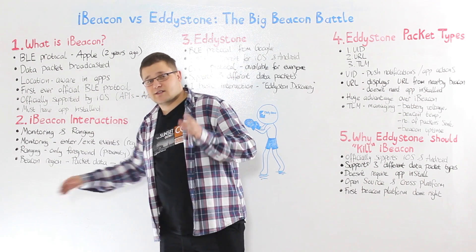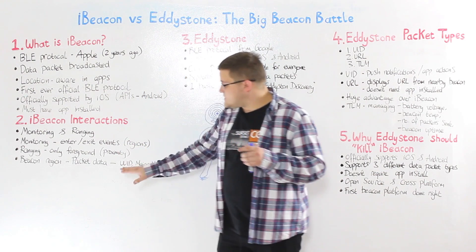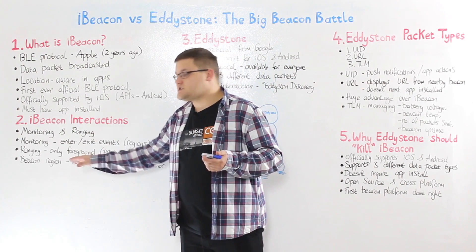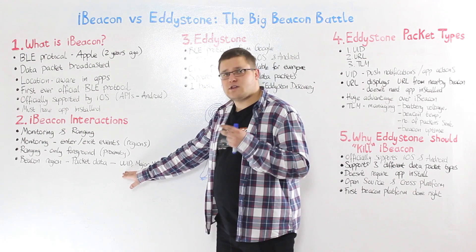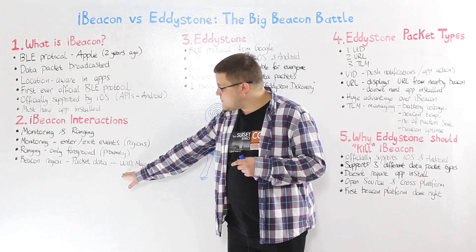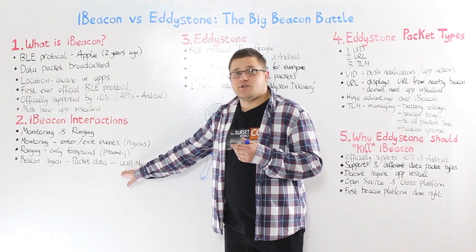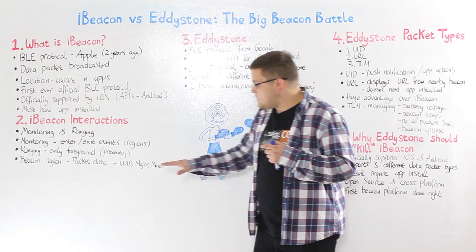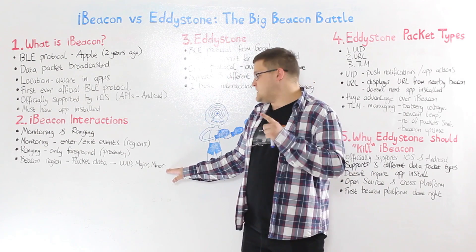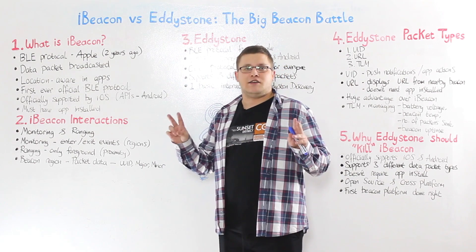I use the term beacon region, so let me say a few words about that. Whenever a beacon sends data, it sends its UUID, major, and minor. We can define beacon regions in three ways: using only the UUID, we monitor for all beacons using that UUID; using UUID and major, we search and monitor for all beacons that use that UUID and major; or using UUID, major, and minor, we monitor only one beacon. Please remember that you should never have two beacons that have the same UUID, major, and minor.